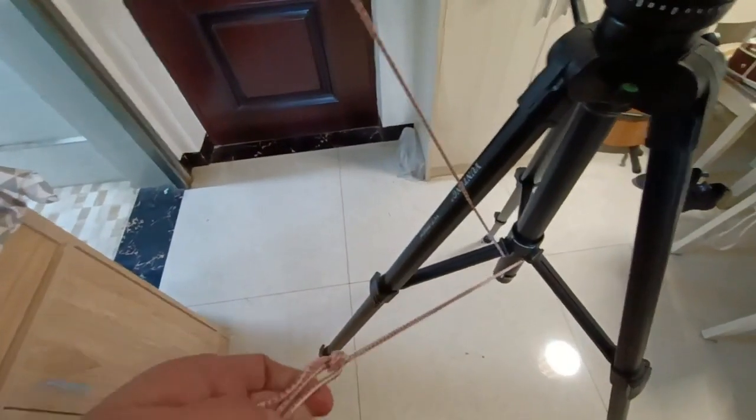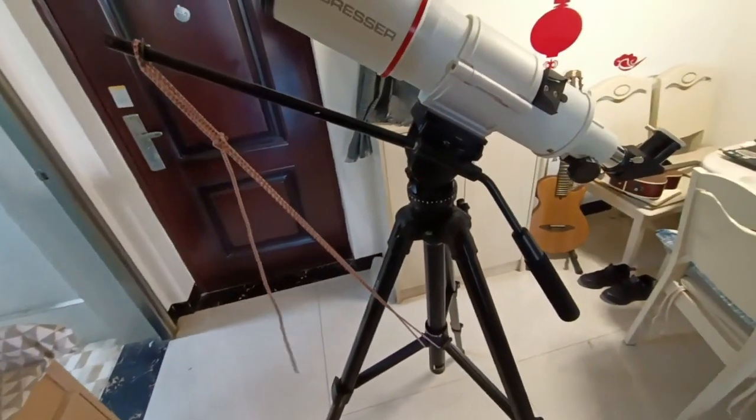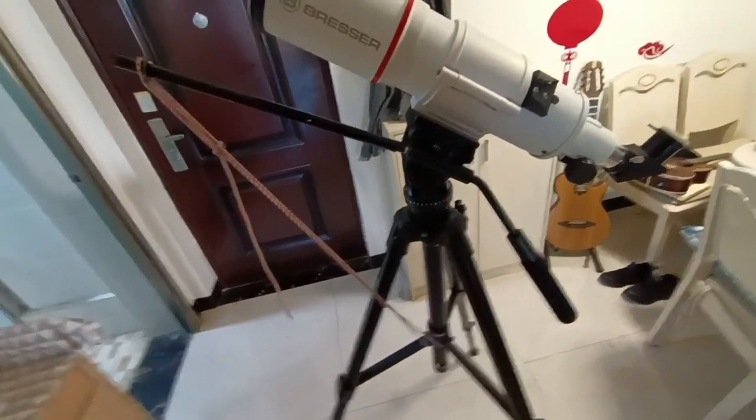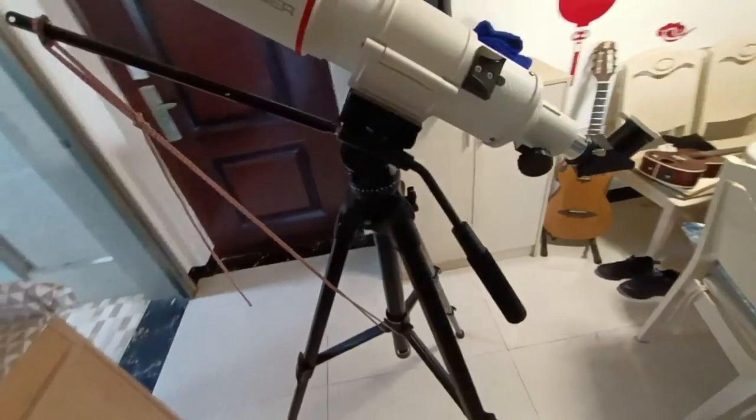Then I tied a loop in the end. Put it back up like that. And that makes a lightweight control. Instead of using a heavy counterweight, I'm just using the bungee as the counterweight.